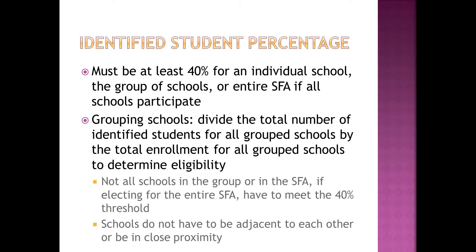Schools don't have to be adjacent to each other or in close proximity. So if you have a cluster of schools with a high DC match and incorporate another school that doesn't have as high a rate, and together they meet 40% when looking at all students totaled, you can group those schools and utilize the community eligibility provision for that group.